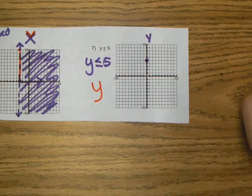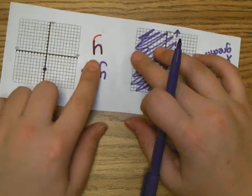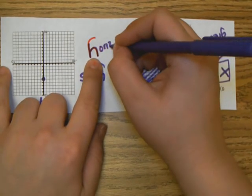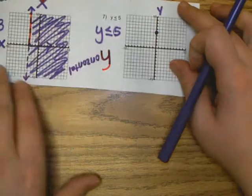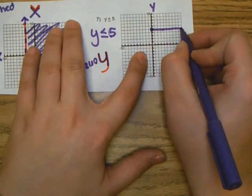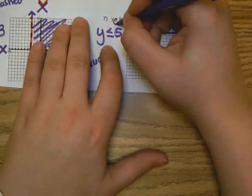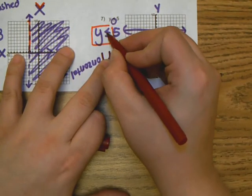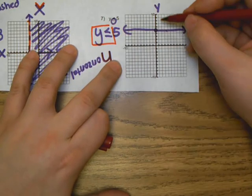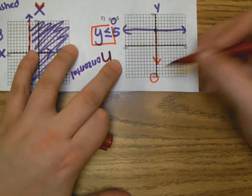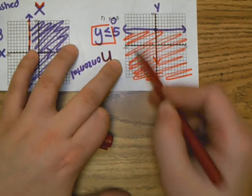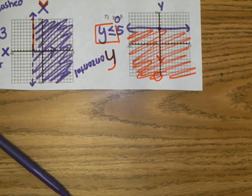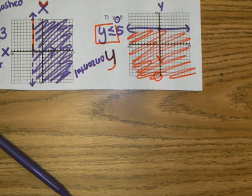One last example — this time it only has y. Go to the y-axis at positive 5. Remember, the letter y upside down looks like an h for horizontal — so this makes a horizontal line. It has the line underneath, so it's a solid line. Reading the inequality: y is less than or equal to — the numbers on the y-axis are less down here, so we shade below the line.